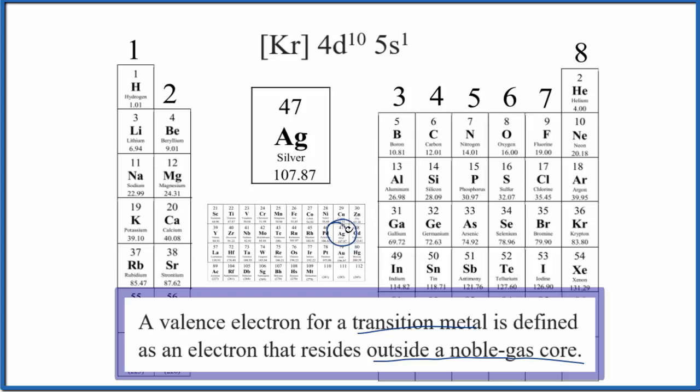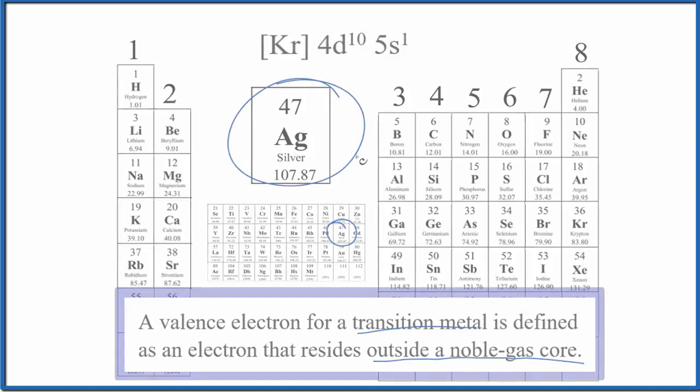And that makes silver a bit of an exception because most of the elements here, they can form ions that have more than one charge. But silver is just one plus. This is Dr. B with the number of valence electrons for silver, Ag. Thanks for watching.